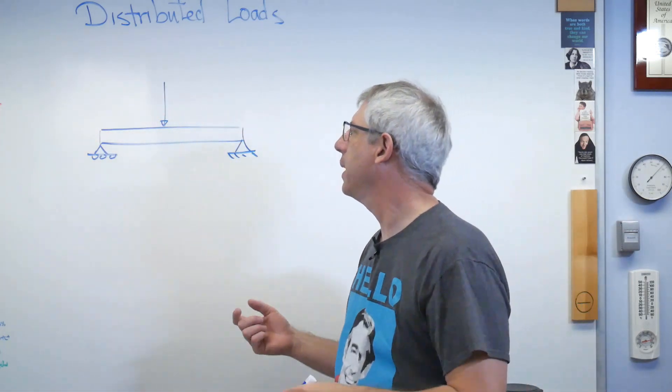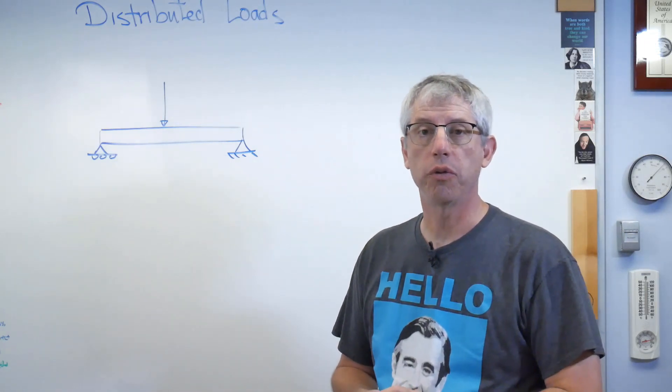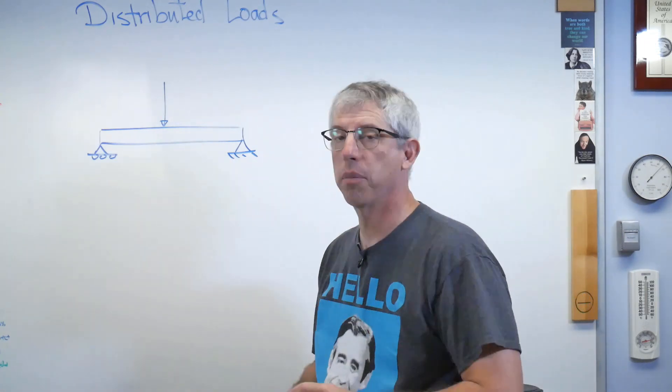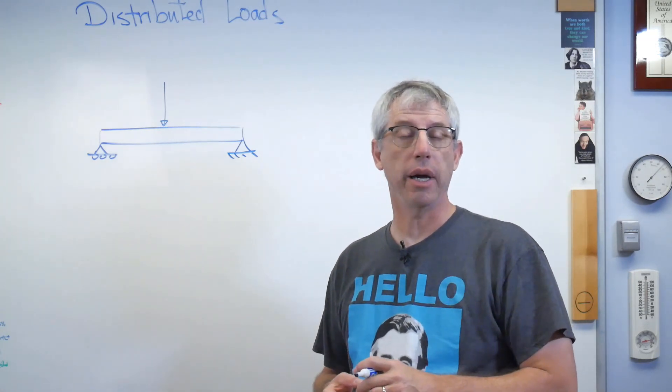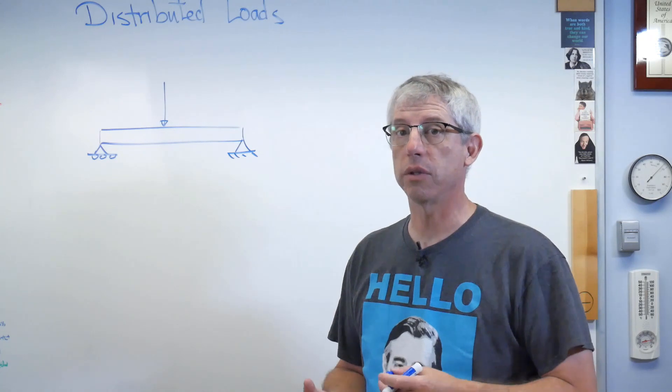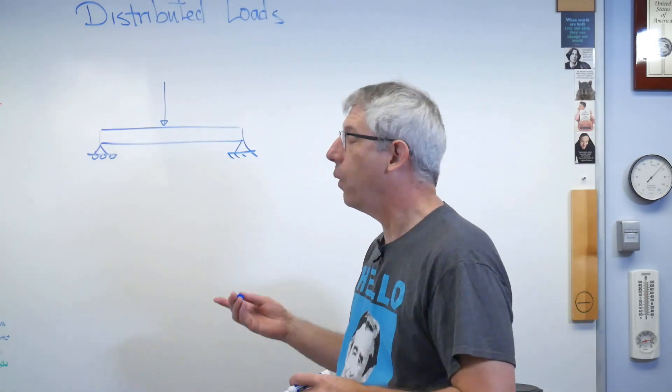What does that mean in real life? Well, it could be part of a bridge, part of a roof truss or something. Maybe this is a truck parked on a bridge. Remember, this is the value of free body diagrams. You can take a complicated situation and turn it into something simple to analyze.